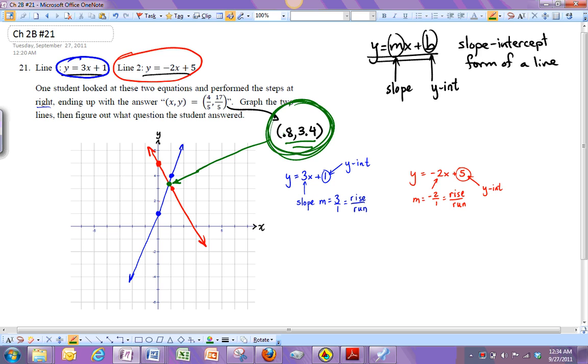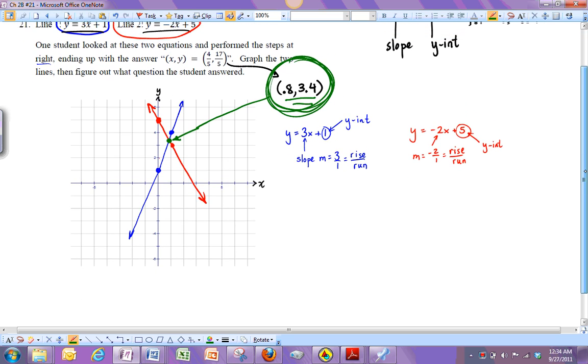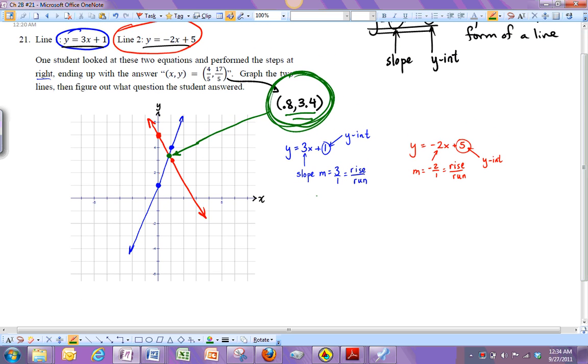Now, let's see how the student did it, because the student didn't graph these. In fact, graphing is a way to get a good idea of where they cross, but unless you're perfect with your graphs and you end up with some nice numbers, it's usually pretty hard to guess where that's going to be. So let's look at the student's work.